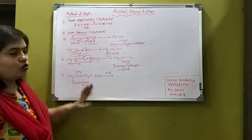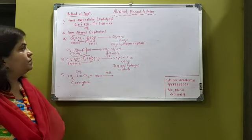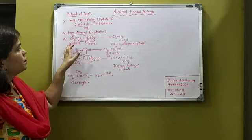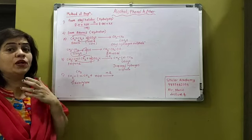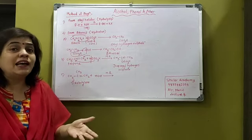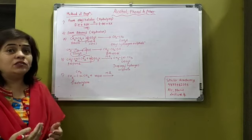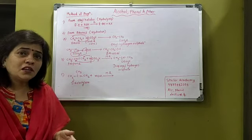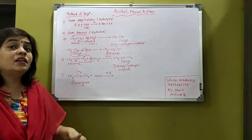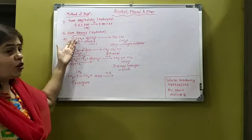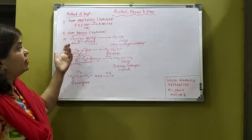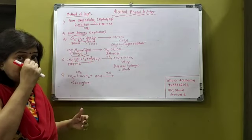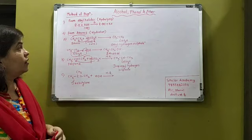Second method, hydration of alkenes. Example, a very simple example. Ethene, common name ethylene, reacts with sulfuric acid. Cold and concentrated. Is it necessary to write? Yes, it is. Addition according to which rule? No rule. Why no rule? Symmetrical. The alkene is symmetrical. So as the alkene is symmetrical, no rule is required here.